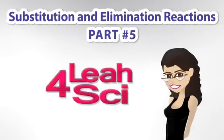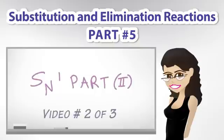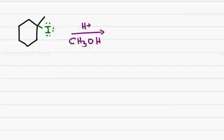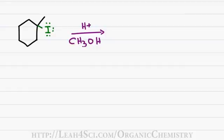Leah here from Leah4Sci.com. In this video, we'll continue the SN1 reaction by analyzing a couple of mechanisms. We'll start by analyzing the reaction of 1-Iodo-1-methyl-cyclohexane reacting with an acid catalyst in a methanol solution.